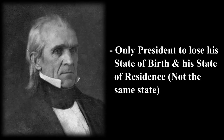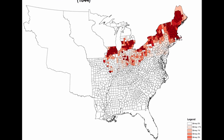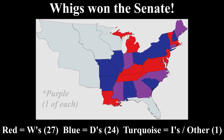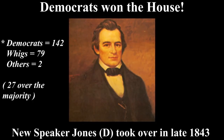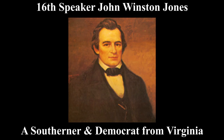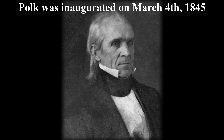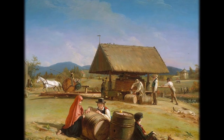Polk became the only president to lose both his state of birth and his state of residence — which were not the same state — those being North Carolina and Tennessee. Many historians argue perhaps the Liberty Party spoiled the election against Clay in the North, but we will never know the truth. In the Senate, the Whigs won 27 out of 52 seats but fell short with 28 needed for a majority. For the House, the Democrats won big, winning 142 seats, 27 over the threshold. New Speaker Jones became the 16th Speaker of the House, a Southern Democrat from Virginia. James K. Polk took office on Tuesday, March 4th, 1845, at the East Portico of the Capitol. Jacksonian democracy had won again and Manifest Destiny would thrive.